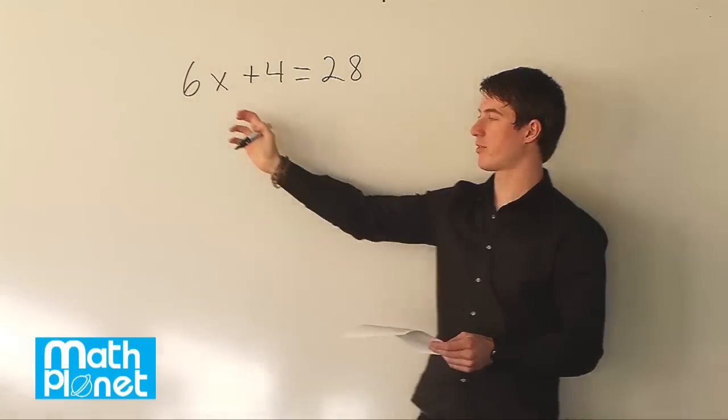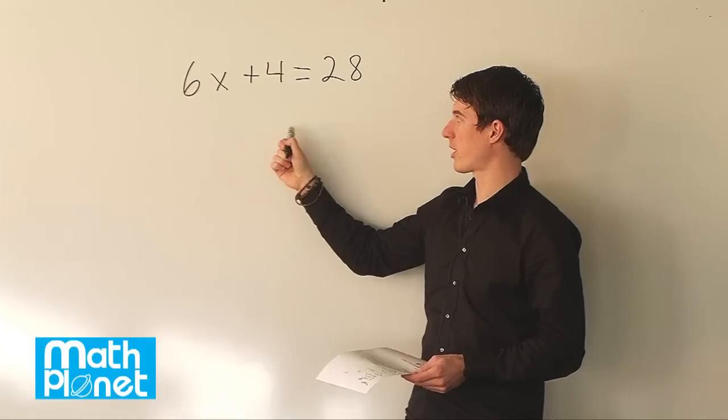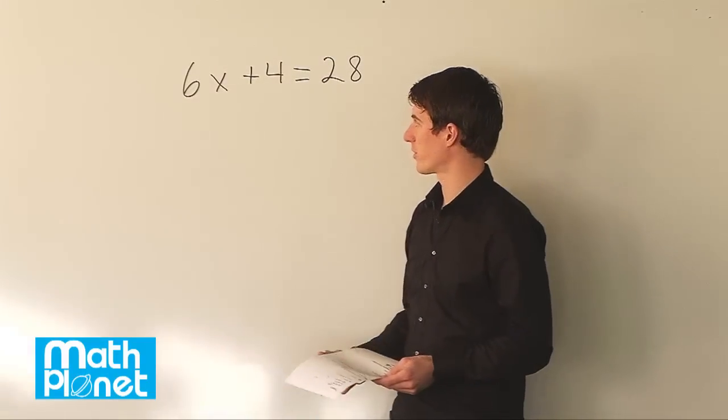To solve this problem, we want to solve so we have x equals something. To do that, we need to use inverse operations to get rid of these two terms, the 4 and 6.